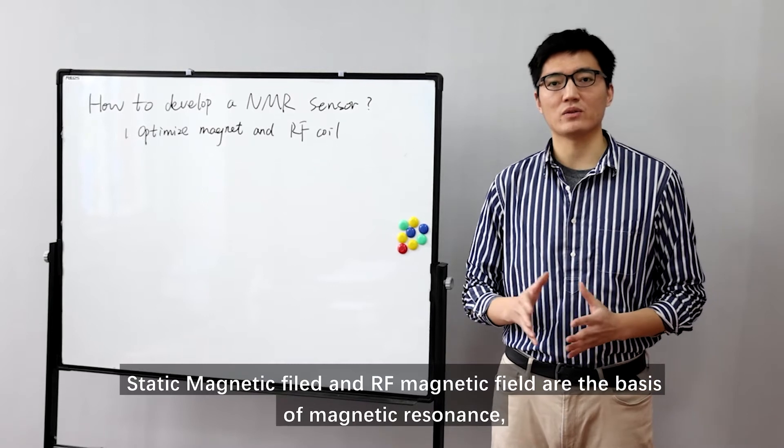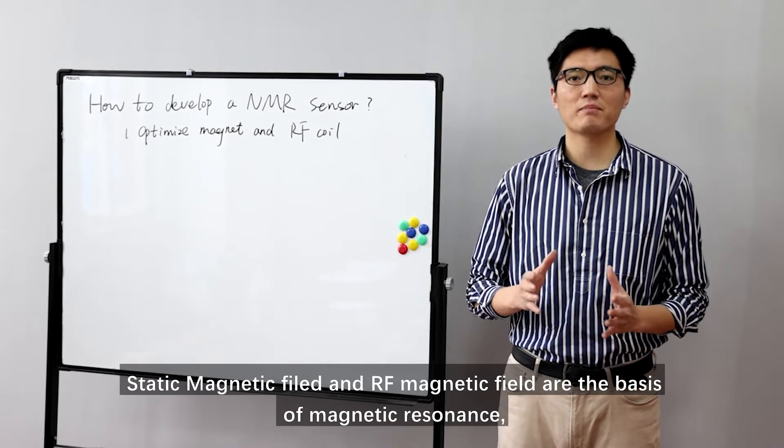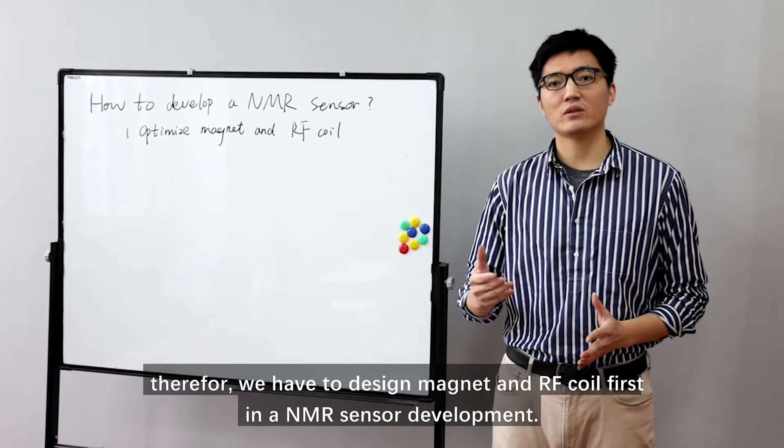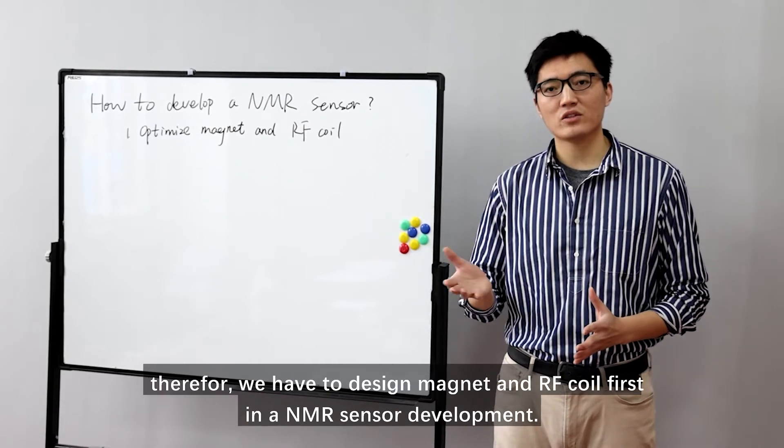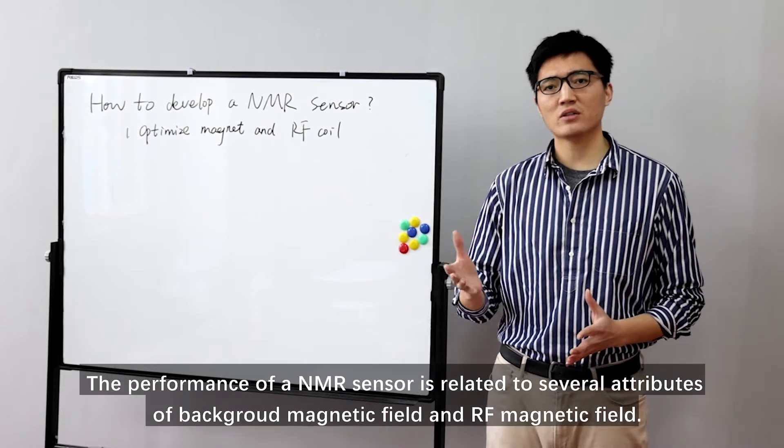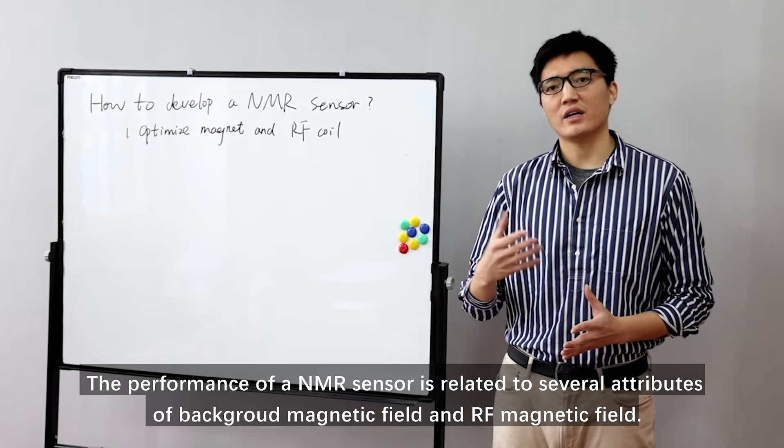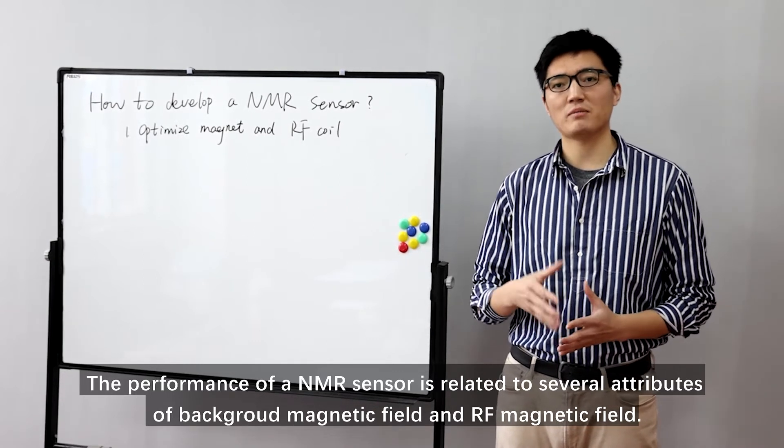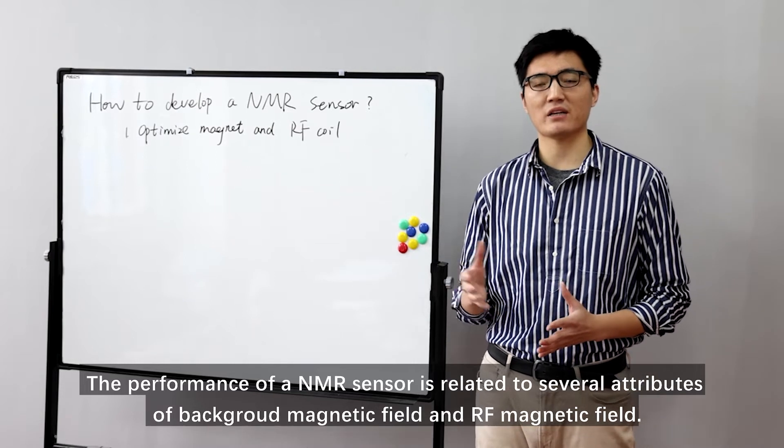Static magnetic field and RF magnetic field are the basis of magnetic resonance. Therefore, we have to design a magnet and RF coil first in NMR sensor development. The performance of the NMR sensor is related to several attributes of background magnetic field and RF magnetic field.